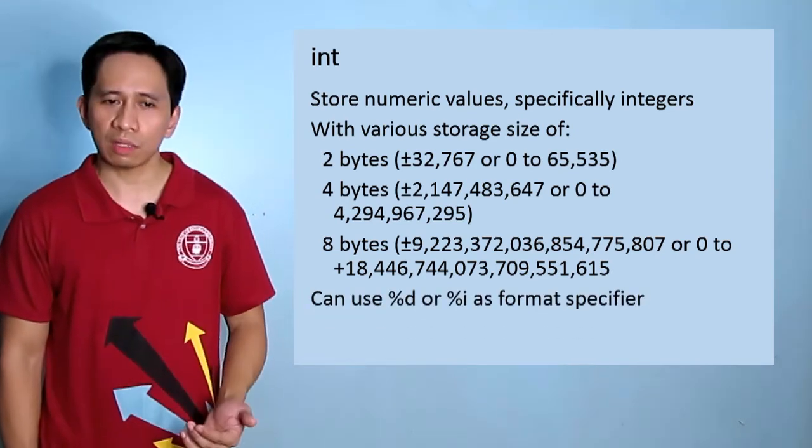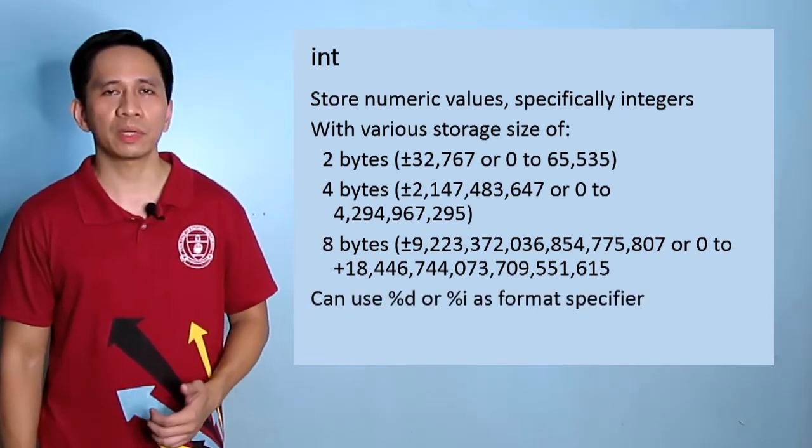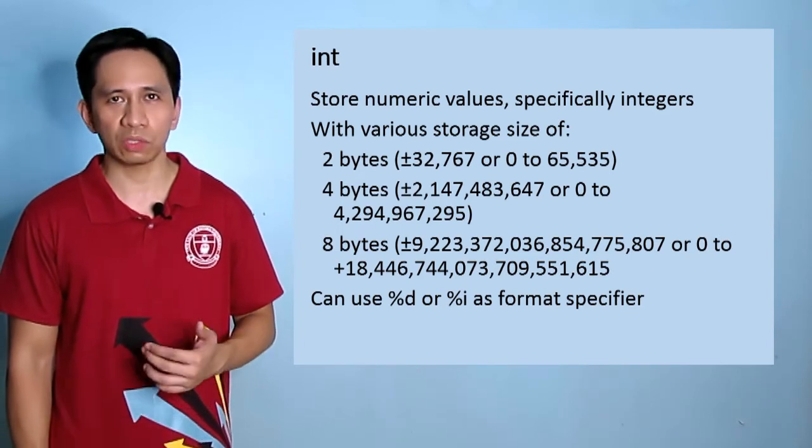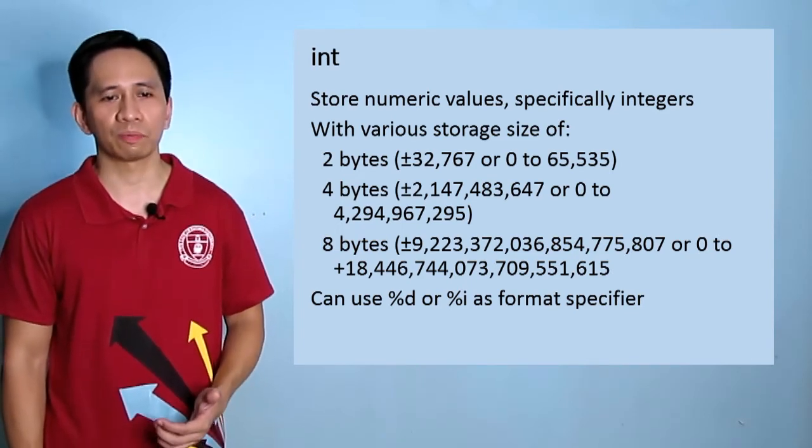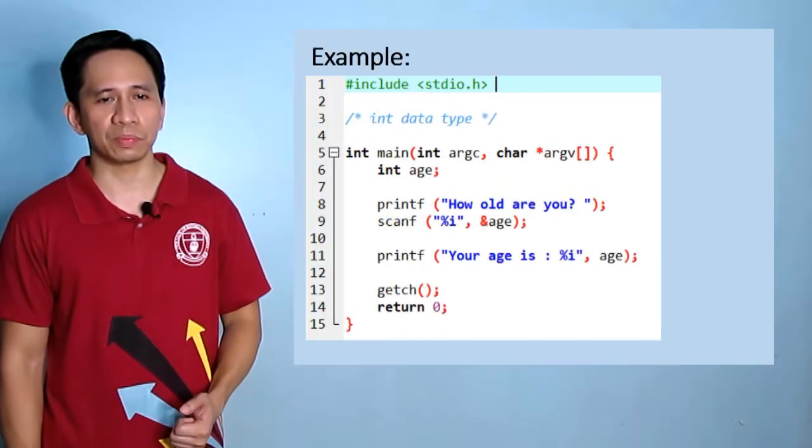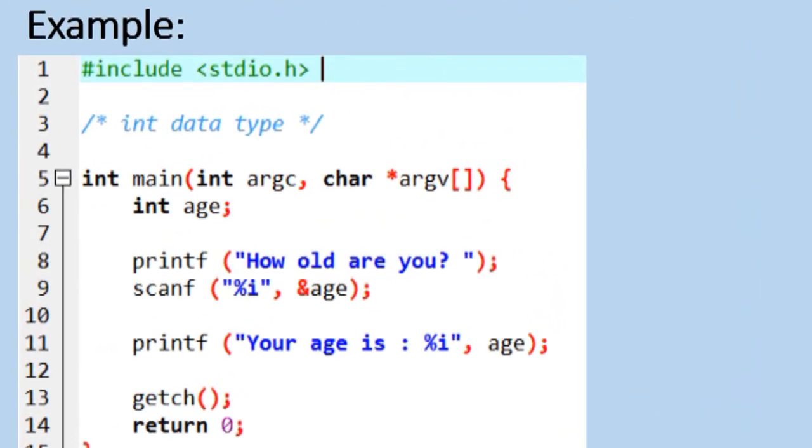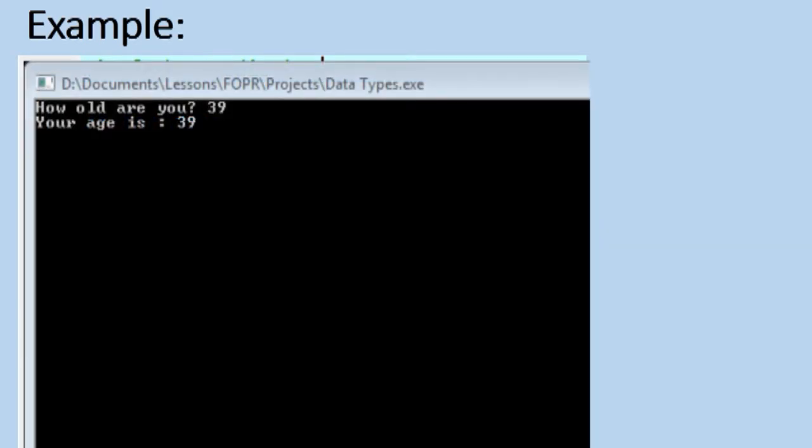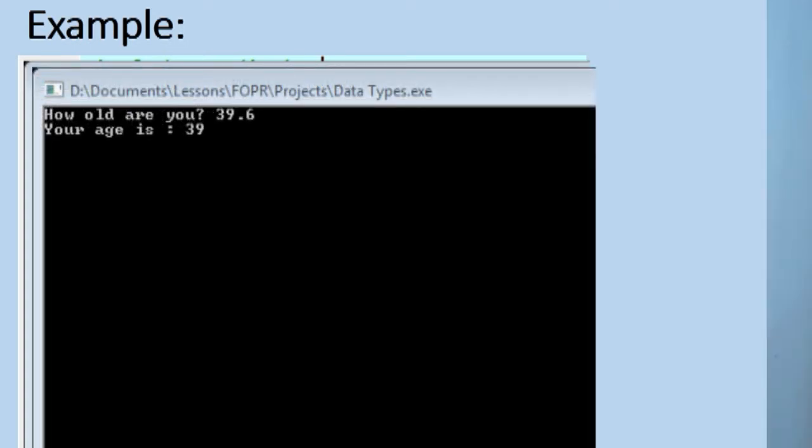We can use %d or %i as format specifiers for printf and scanf. Let us look at this example. Pause the video for a while and do it in Dev C++. Running the program, you see this output. If you try to input decimals, it will truncate the value and just display the whole number.